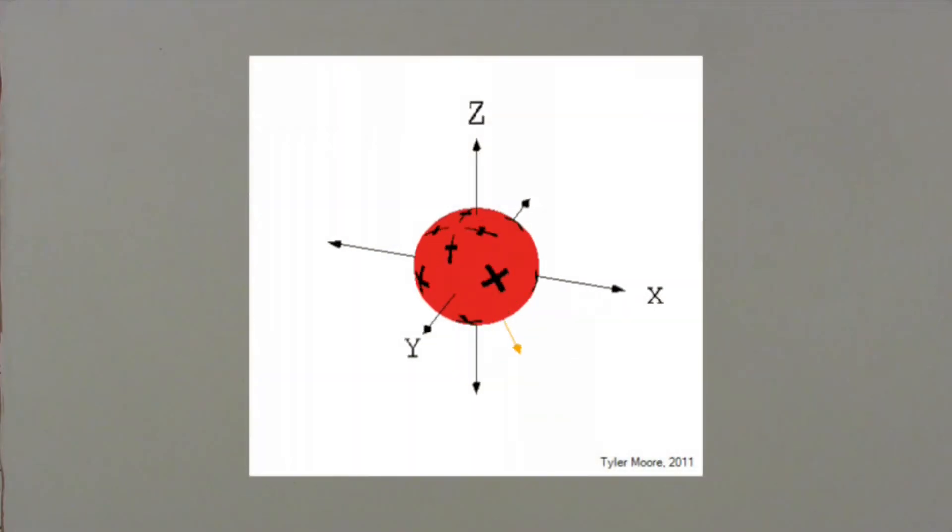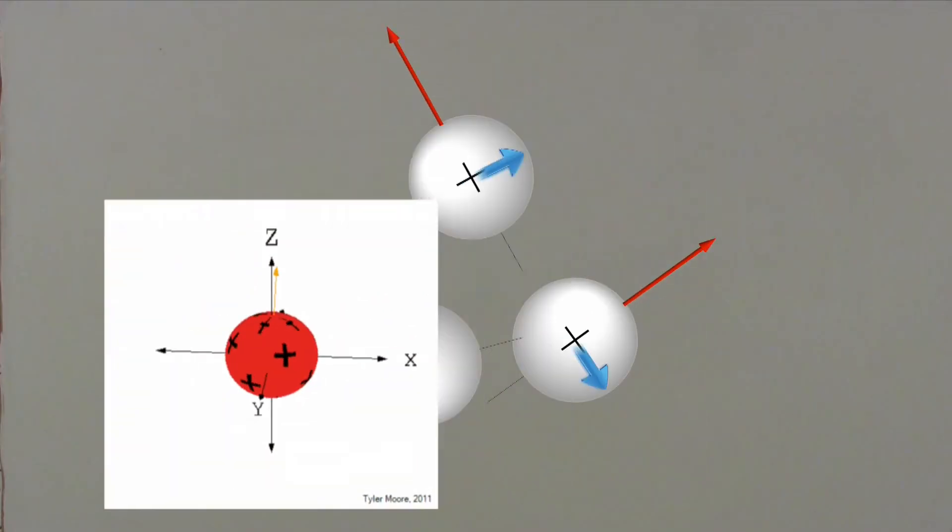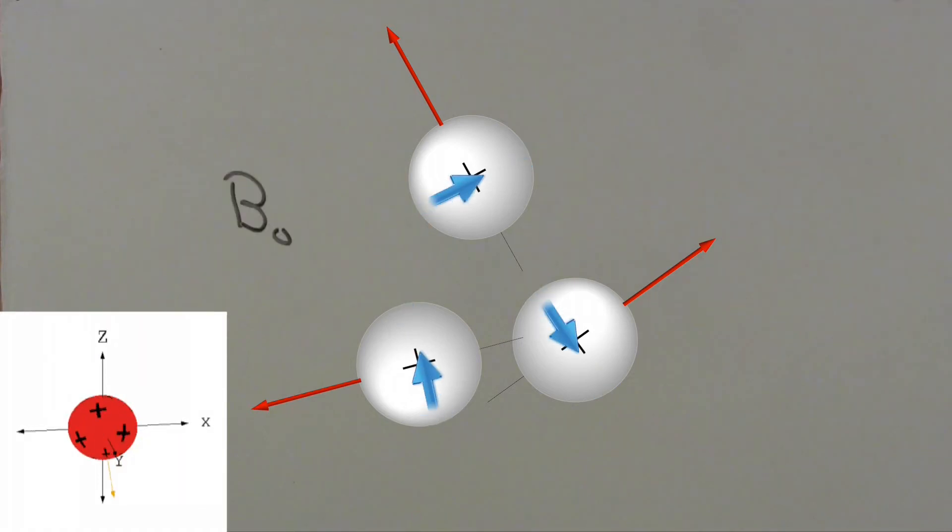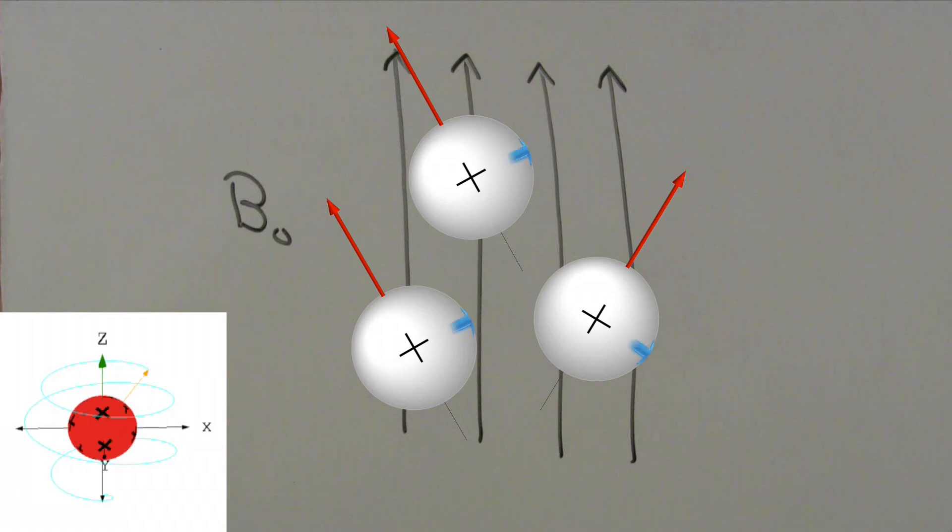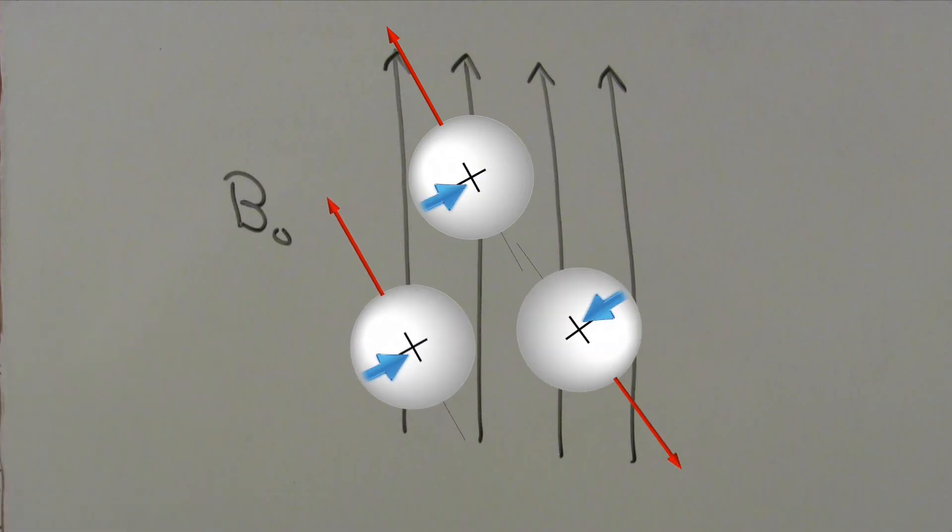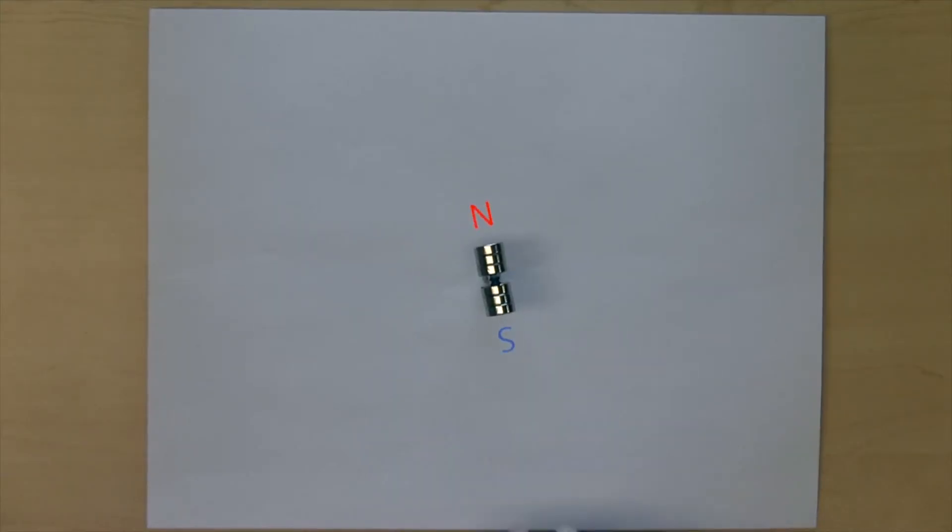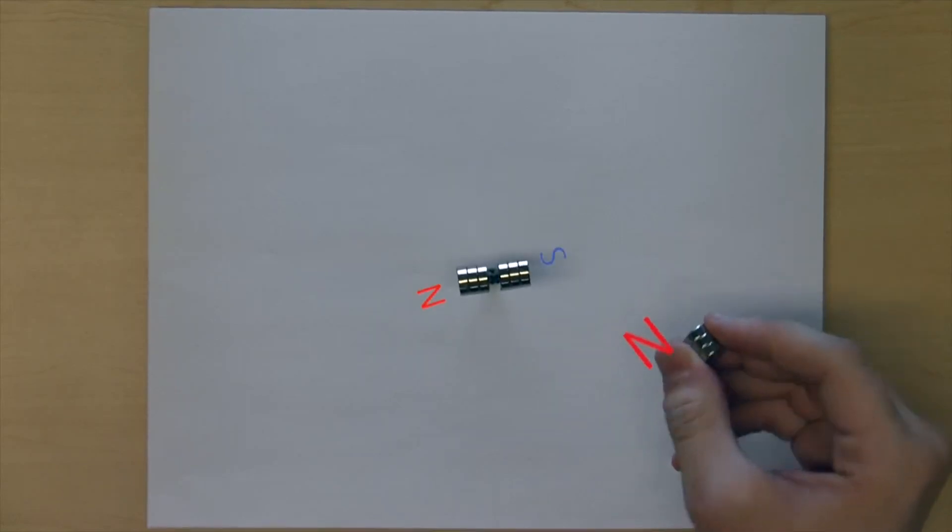Under normal circumstances, nuclei can spin in any direction. However, if you apply a magnetic field, there becomes an energetic preference for the dipoles to align with the magnetic field. If we wanted a nucleus to align against the field, we would have to provide energy. This interaction is similar to the interaction between two magnets. Magnets want to align for stability.